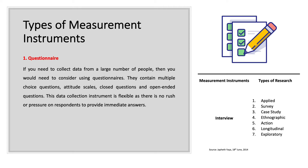The first type of measurement instrument is the questionnaire. If you need to collect data from a large number of people, then you would need to consider using questionnaires. They contain multiple choice questions, attitude scales, closed questions, and open-ended questions.